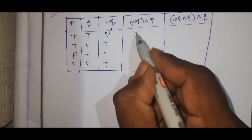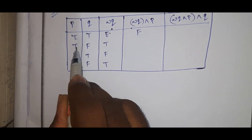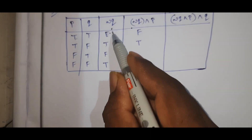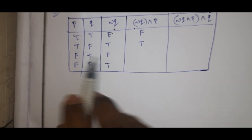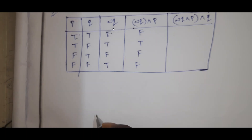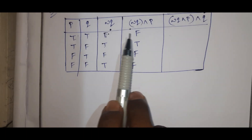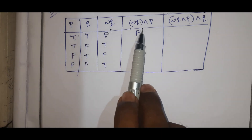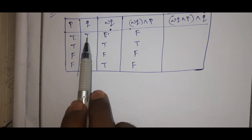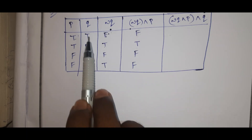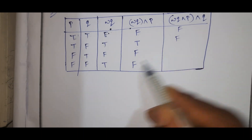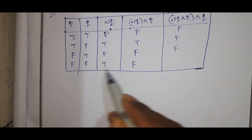Now for negation Q AND P: when both are true, the result is true. False and true gives false. Next is false. Next is false. The AND column values are: false, true, false, false.